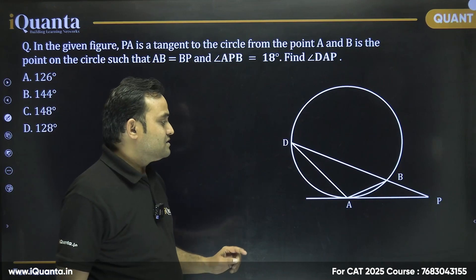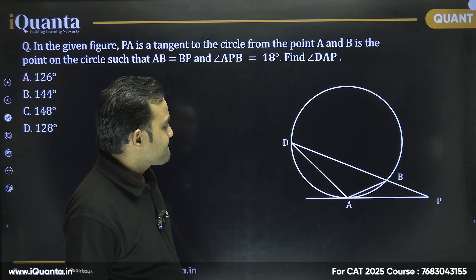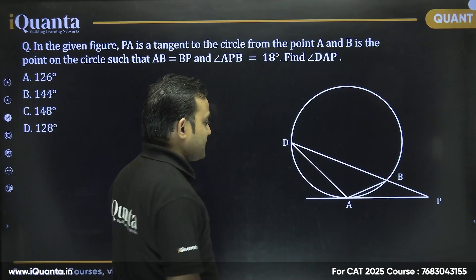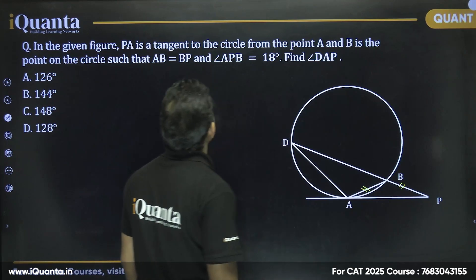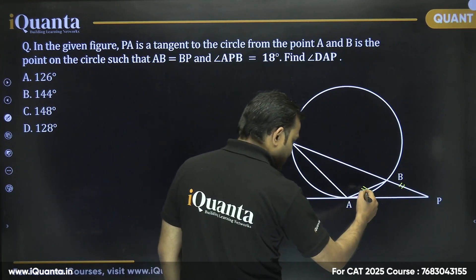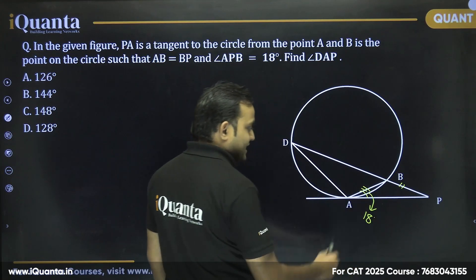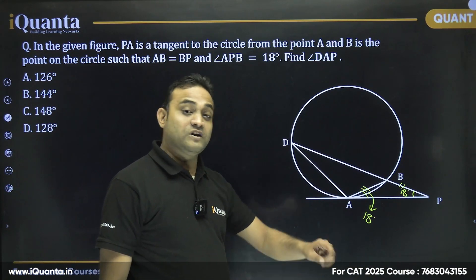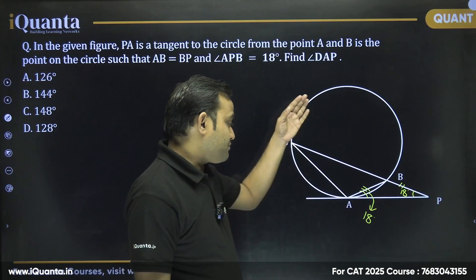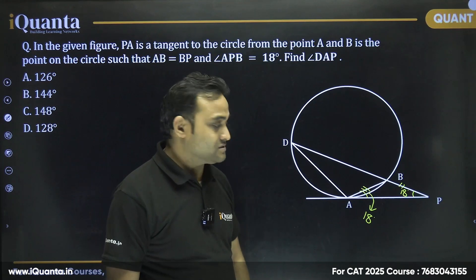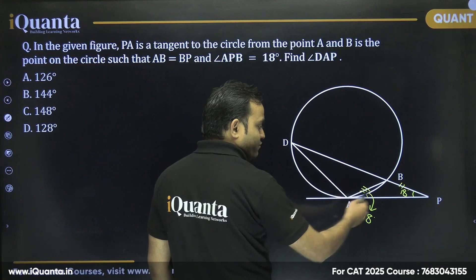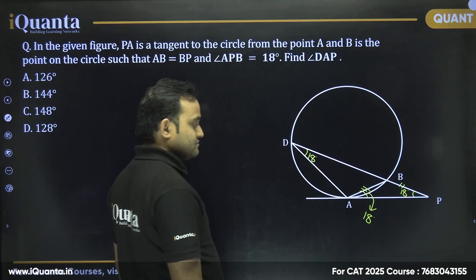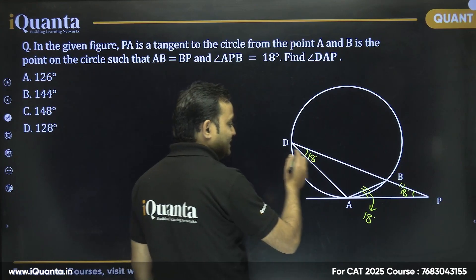Next question: in the given figure, PA is a tangent to the circle from point A. B is a point on the circle such that AB = BP and angle APB = 18 degrees. Since AB = BP, these two angles are equal, so this angle is also 18 degrees. From the first video on circles, the angle made by chord AB with the tangent equals the angle made by AB on the circumference, so this angle is also 18 degrees.